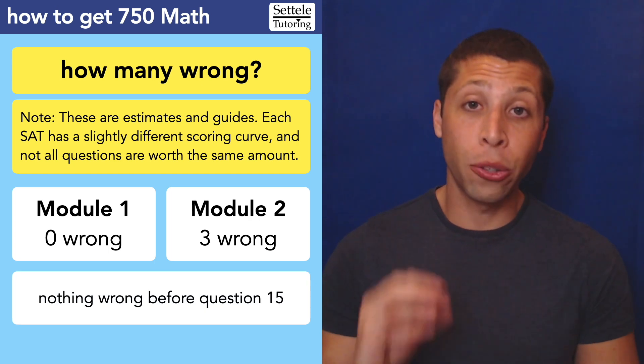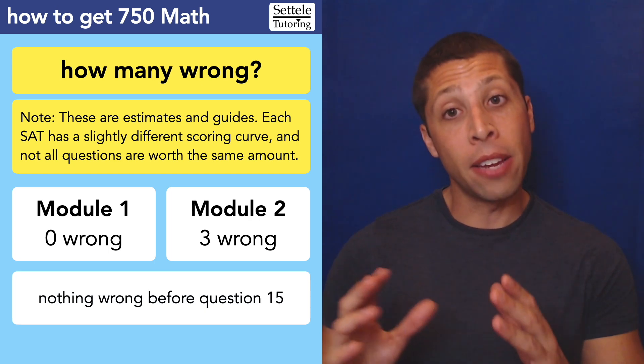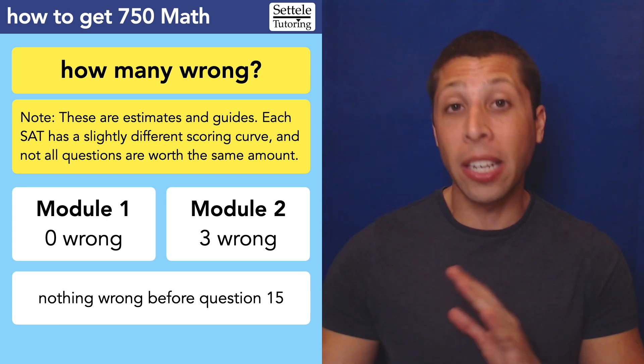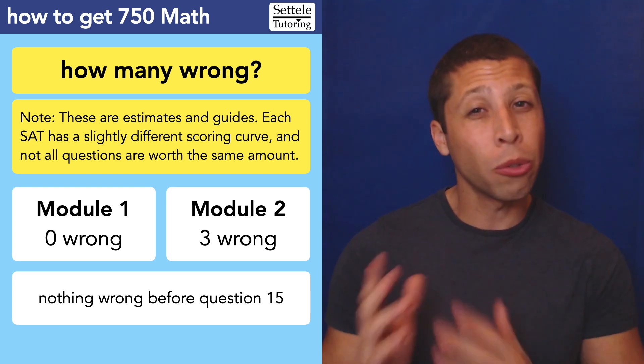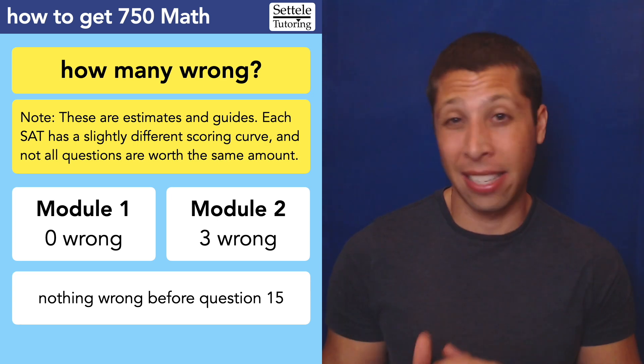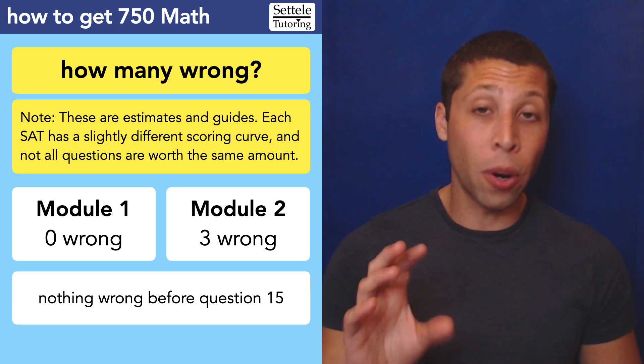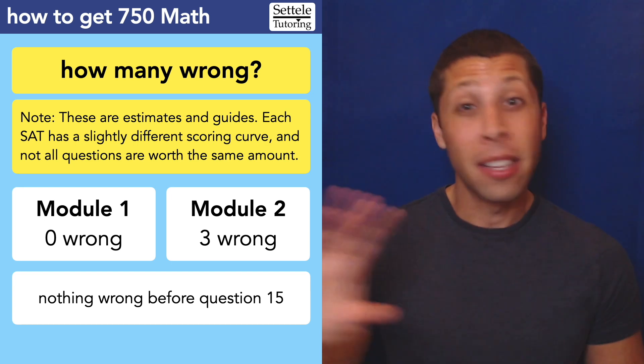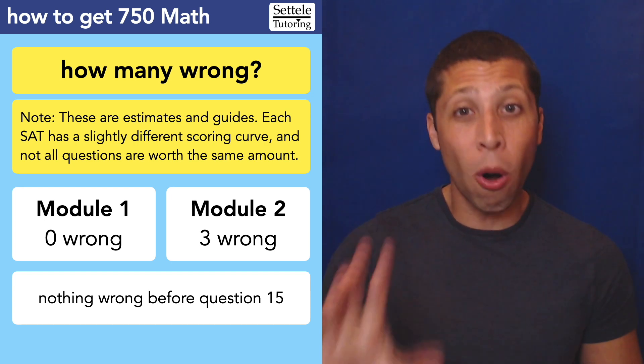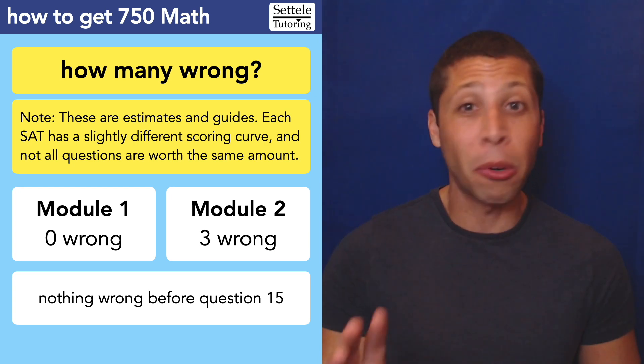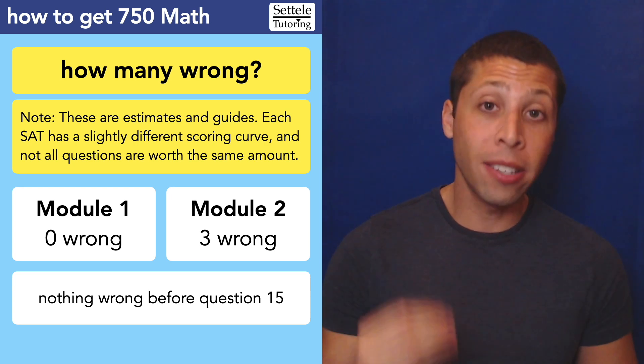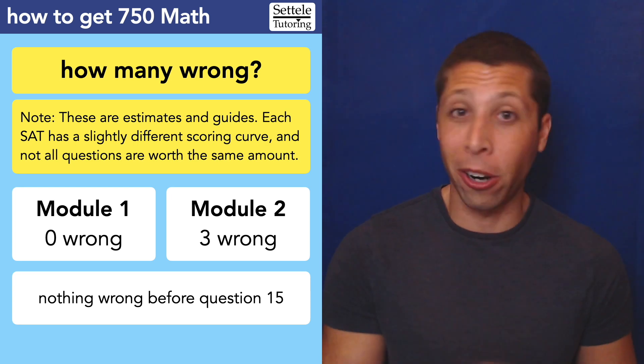But along the way, you also cannot make any careless mistakes. In the first module, I would say again, nothing can be wrong, but really the hard questions in the first module don't start until about number 19, 18. But in the hard module, the number 15 is where the first hard question really is. Some things before that might feel hard, but no, if you know all the things you're supposed to know, if you've memorized all the formulas and all the topics, then pretty much everything up to 15 should be very routine and very robotic. So you need to be getting all of that right confidently and quickly so you have tons of time to work through the truly hard stuff from 15 on. So anything before that is a careless mistake.